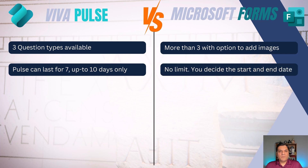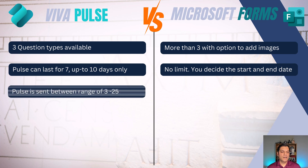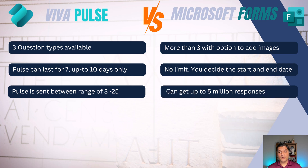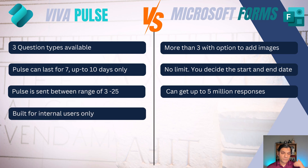In Microsoft Forms there's no time limit — you decide the start and end date and it can run as long as you want. Another important difference: Viva Pulse is sent to between 3 and 25 people — that range is fixed. Microsoft Forms has no practical recipient limit; it can receive up to 5 million responses, so there's essentially no cap on how many people you send it to.